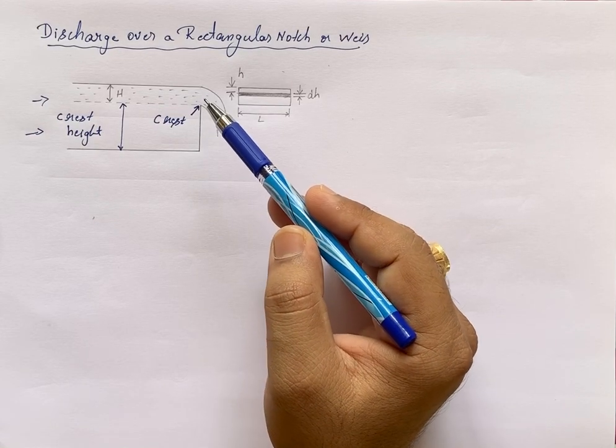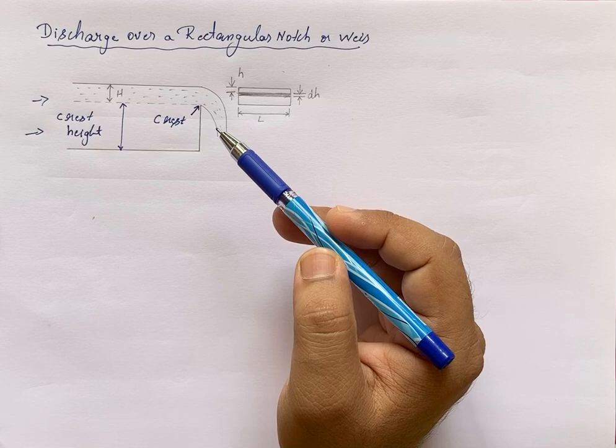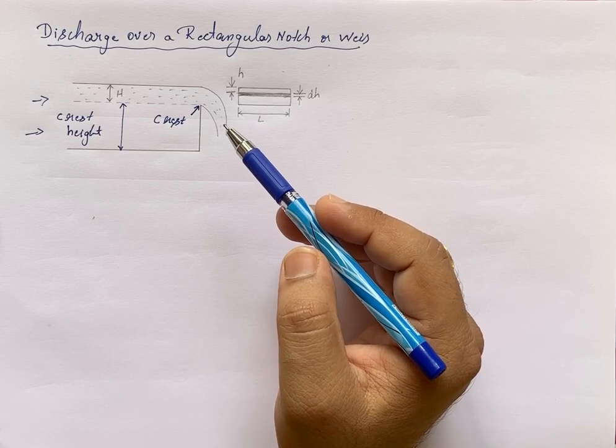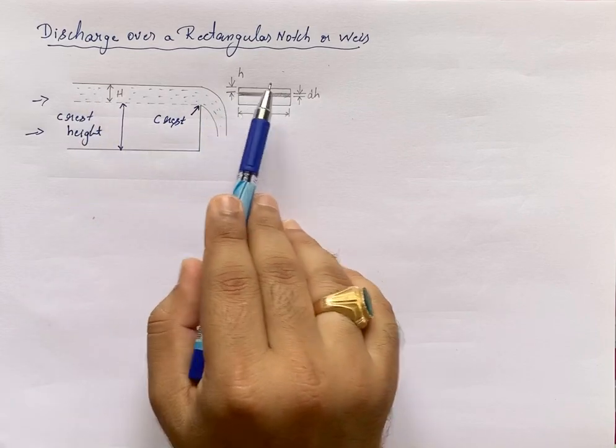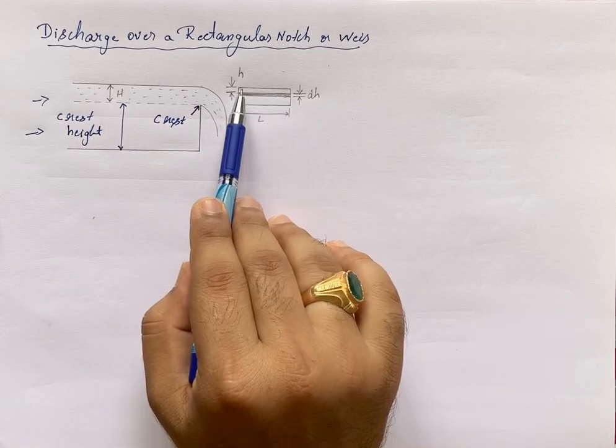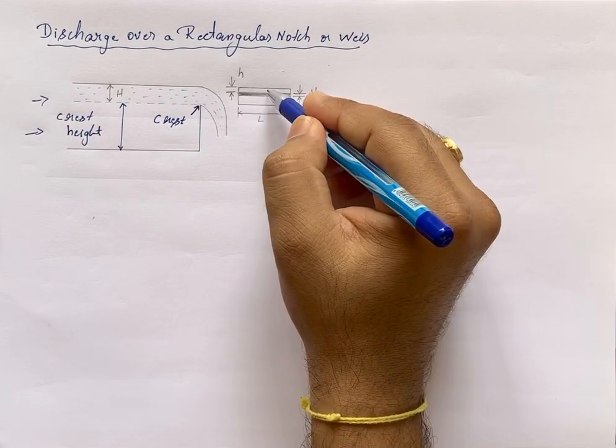Now we shall find out how to find the discharge over a rectangular notch. For this, we consider the head over the notch as H.